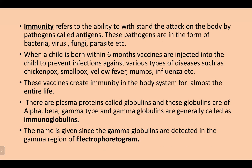There are plasma proteins called globulins, and these globulins are of alpha, beta, and gamma types. Gamma globulins are generally called immunoglobulins.